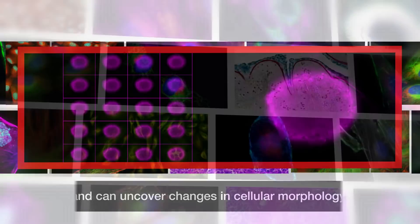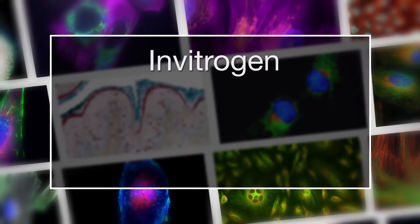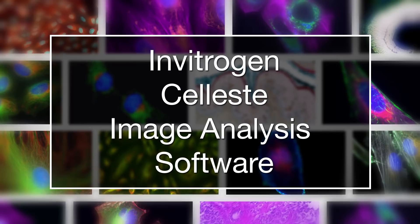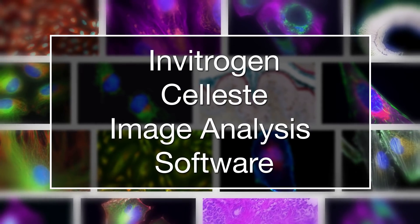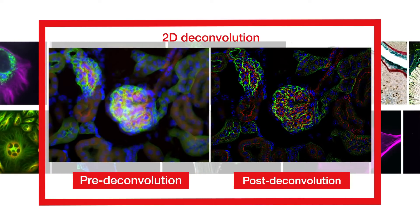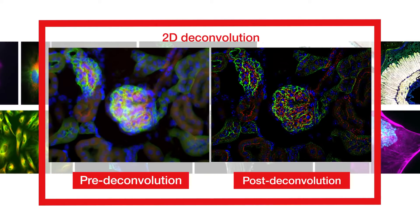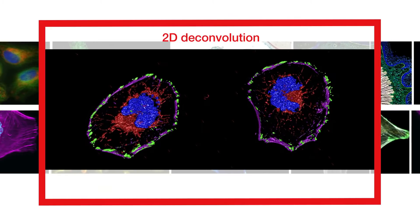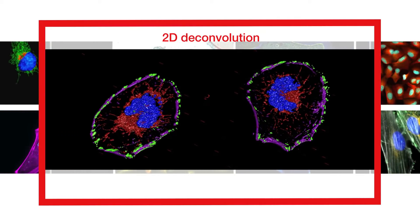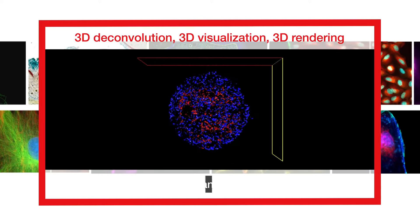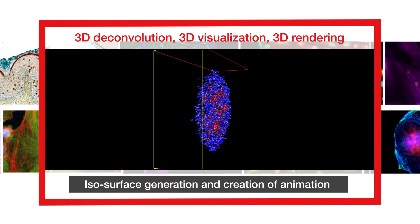Celeste image analysis software with EVO's M7000 provides powerful 2D and 3D restoration algorithms. These modules allow you to de-convolve your images to enhance contrast and quality, or to visualize them in Z-plane, over time, and by channel.